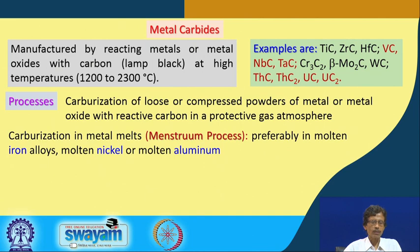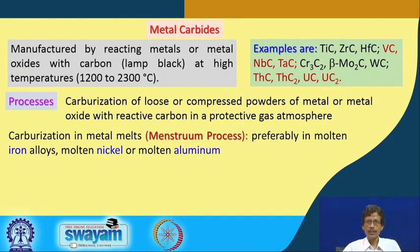This carburization process takes place with a particular process known as the Menstrom process. In the Menstrom process, the corresponding molten metals are used — similar to how a blast furnace is used to obtain molten iron, high-temperature furnaces can be used for getting molten metals to produce those carbides.